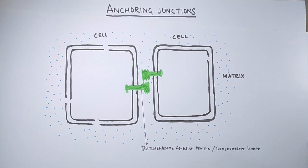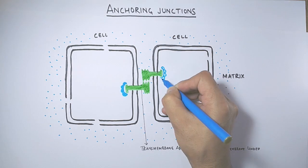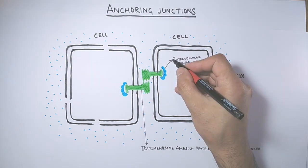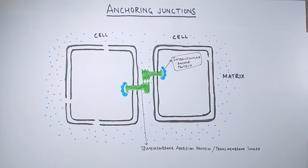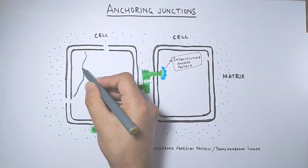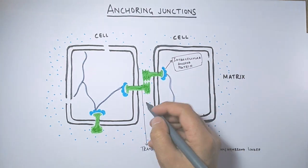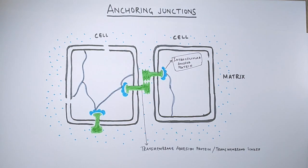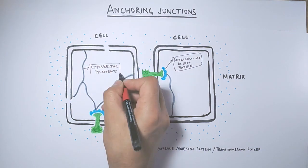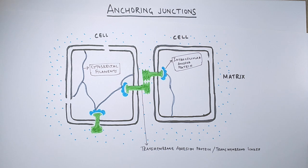Two linkers join together outside of the cell and bridge the two cells. Looking at the inside of cells, we have another protein shown in blue color called anchor protein, whose function is to link the cytoskeleton filaments with the linker proteins. Another junction shown here is the cell-to-matrix junction, like hemidesmosomes. The cytoskeleton filaments link with the anchor protein, which eventually links to the transmembrane linker.